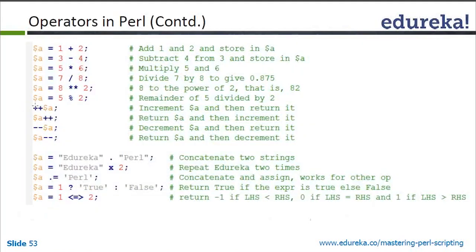You can increment post or pre. Pre-increment means you increment first, then assign. Post-increment means you assign the current value first, and the increment happens in the next step. For concatenation, if you want to concatenate two strings, use the dot operator — it is only for strings. So 'Eureka' dot 'Perl' produces 'EurekaPerl'.